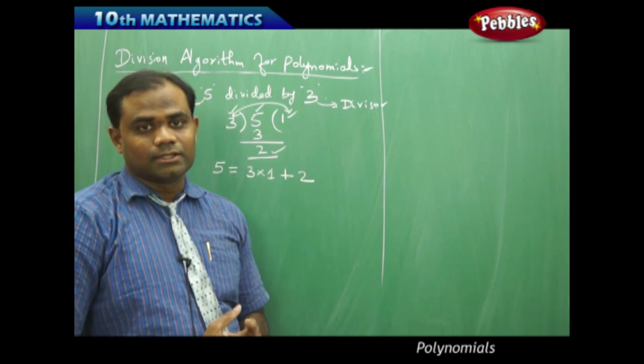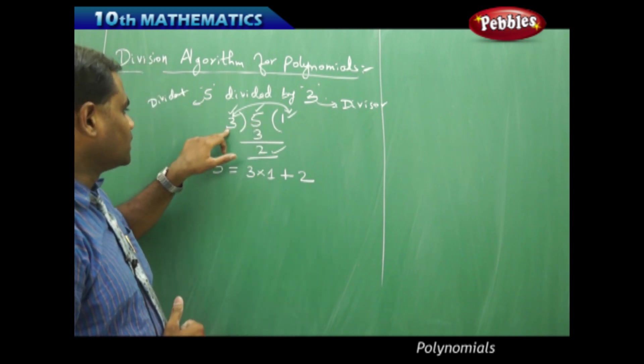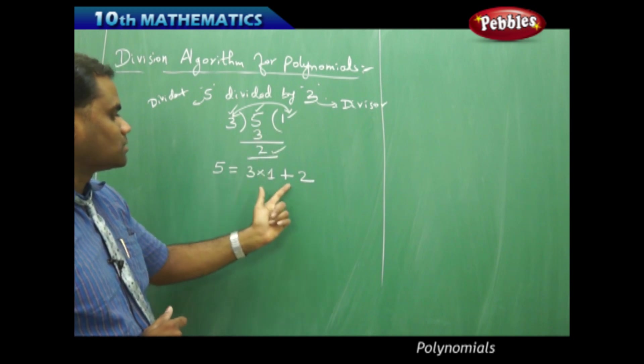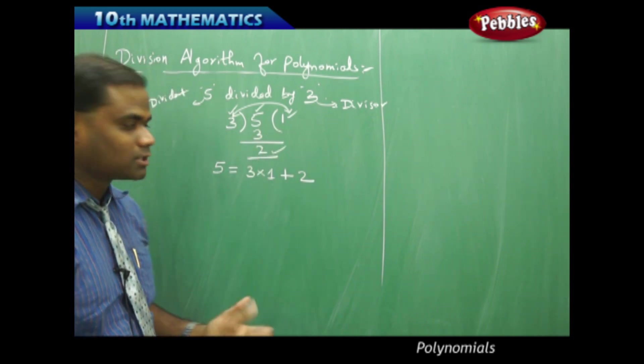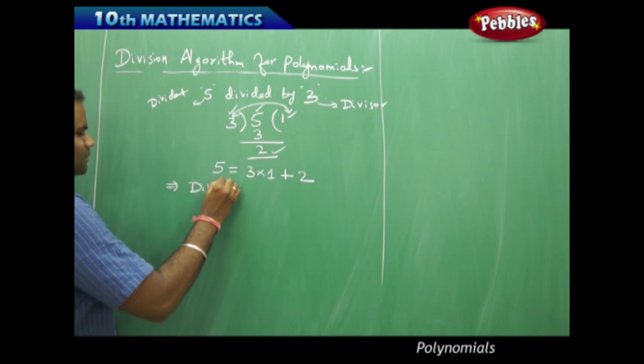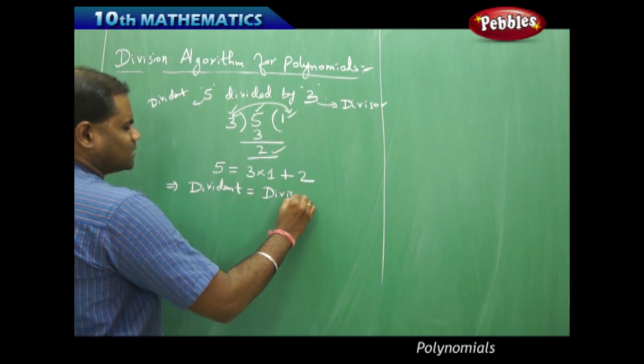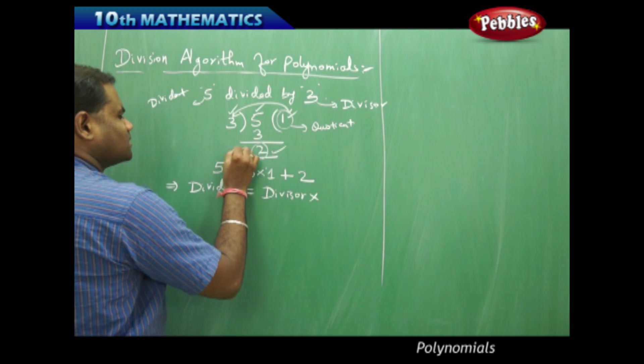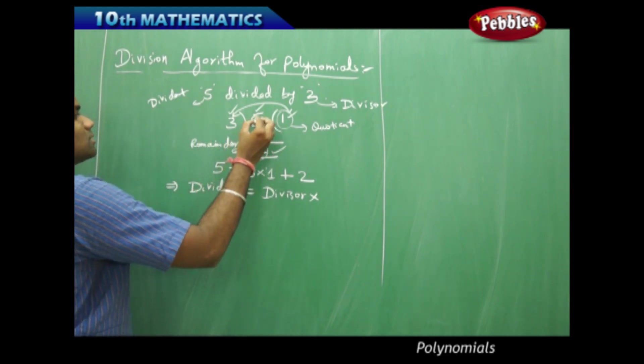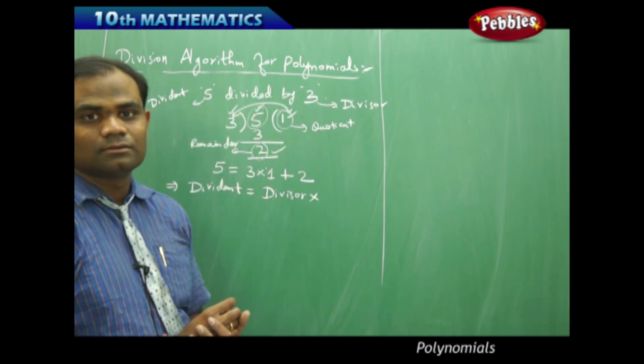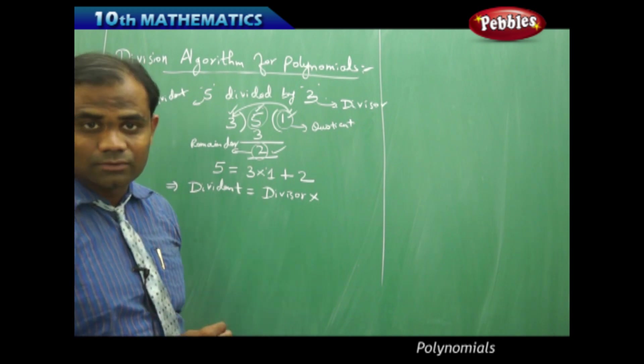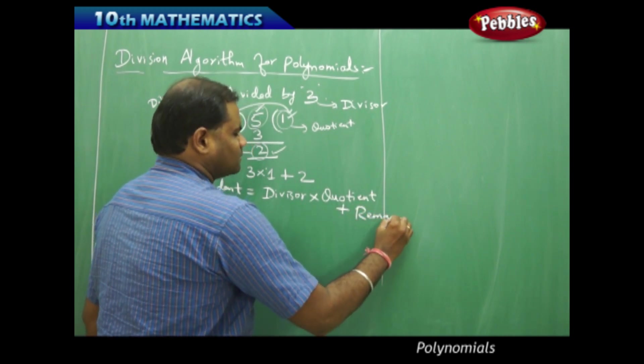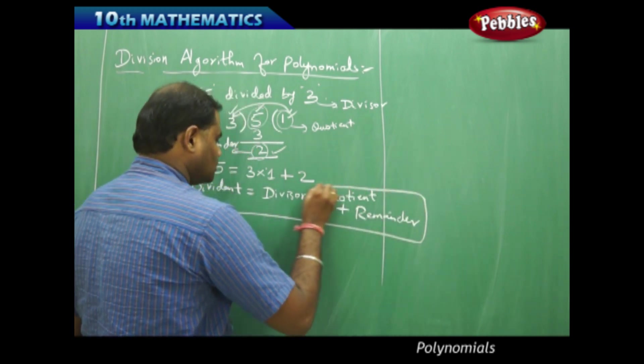For any numbers you divide in this universe, if they are divided with 5 divided by 3 or any number divided by another number, then I get that number in the numerator is 3 times 1 plus 2, which is the division algorithm. More precisely, we write this as: dividend is divisor times quotient plus remainder. This is the coefficient and this is the remainder, relating dividend, divisor, quotient, and remainder, which is called the division algorithm for numbers.